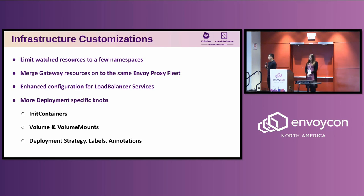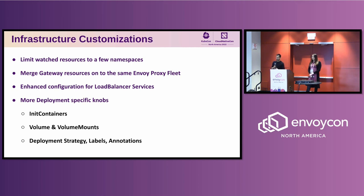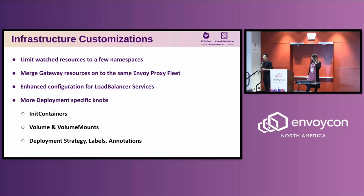When we started this project, based on Gateway API semantics, we decided to map a single gateway resource to a single Envoy proxy fleet. When users started using it, the feedback was that they wanted to map multiple gateway resources to a single Envoy proxy fleet to optimize CPU and memory. So we introduced the merge gateways field to achieve exactly this. We also added more fields in the Envoy service and Envoy deployment to expose more use cases.